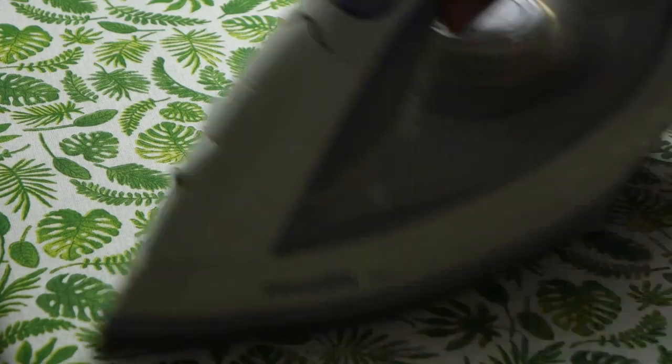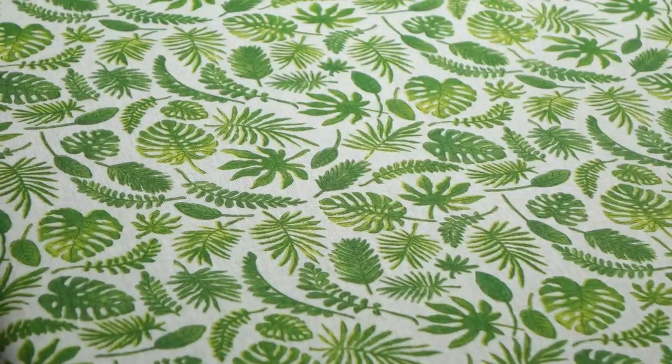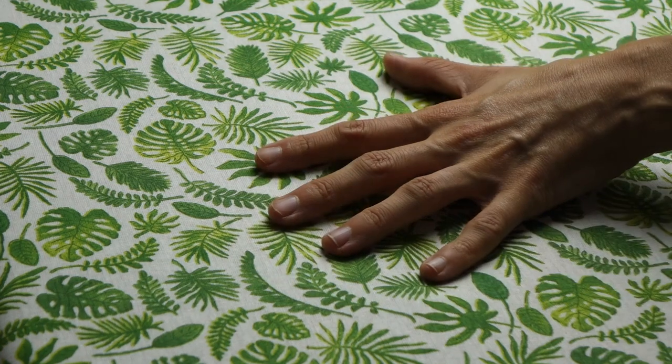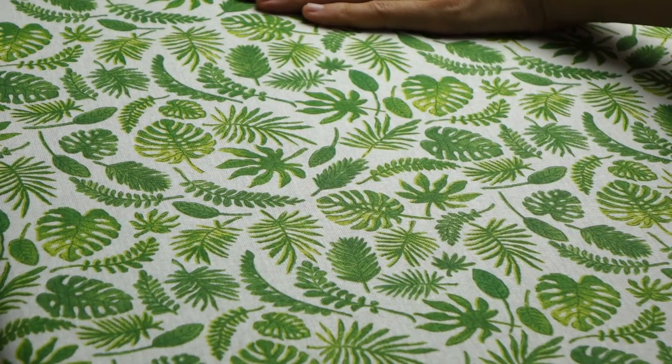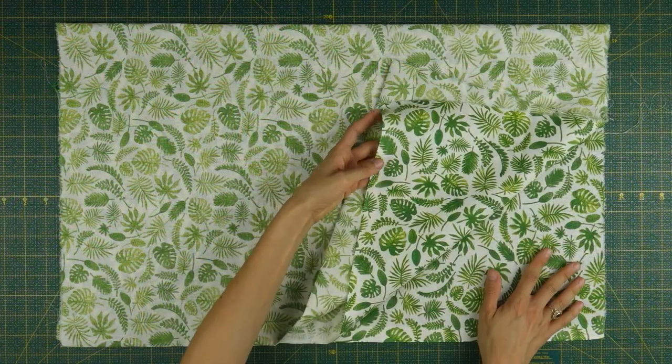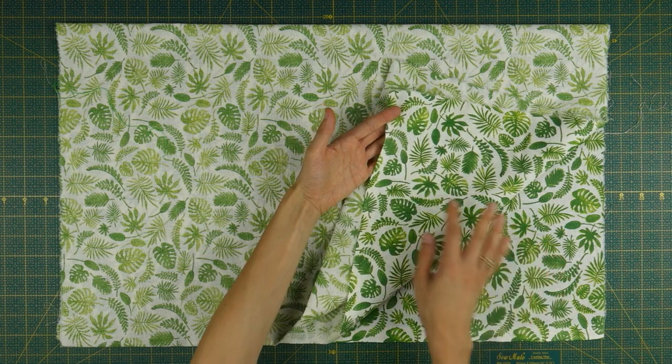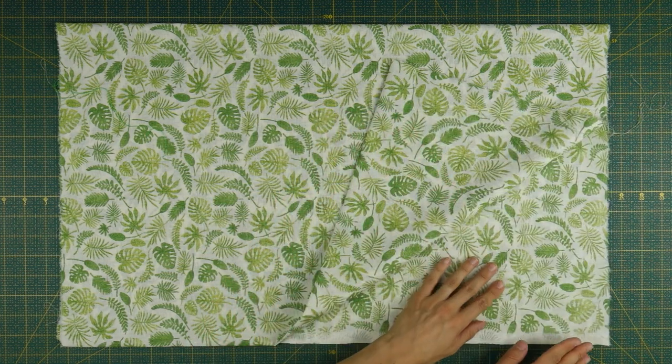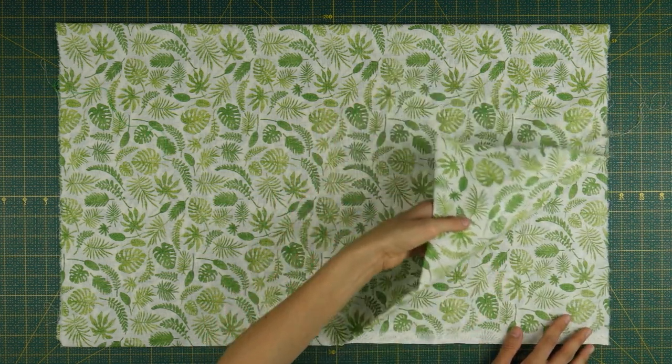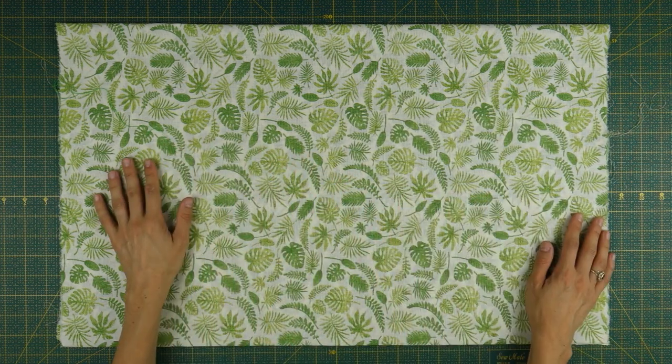After washing your fabrics, it's time to press them flat. When that's done, we will fold them width-wise, right sides together once, then a second time so as to quickly and cleanly cut our fabric stripes.